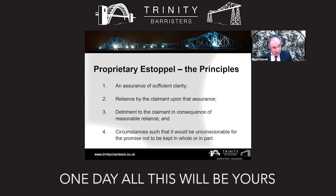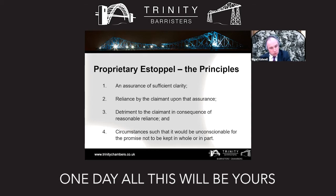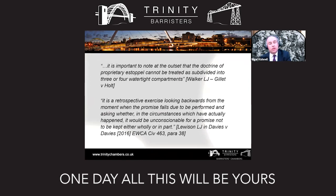That brings me to the principles one must prove to establish a proprietary estoppel. First, one needs an assurance of sufficient clarity — a promise clear enough to be relied upon. Second, there must be reliance by the claimant upon that assurance in fact. Third, the claimant must act to his detriment in consequence of the reasonable reliance placed. And finally, the court must be satisfied that it would be unconscionable for the promise not to be kept in whole or in part.